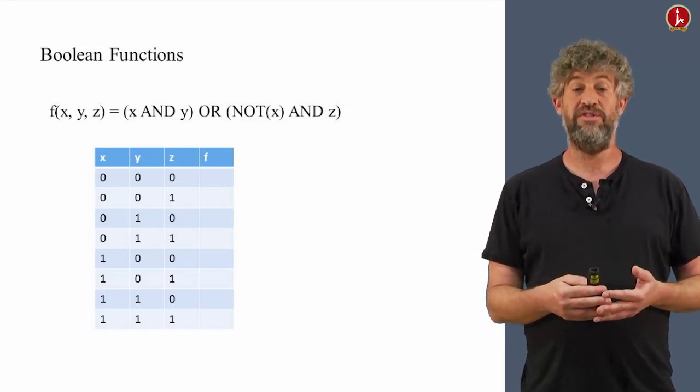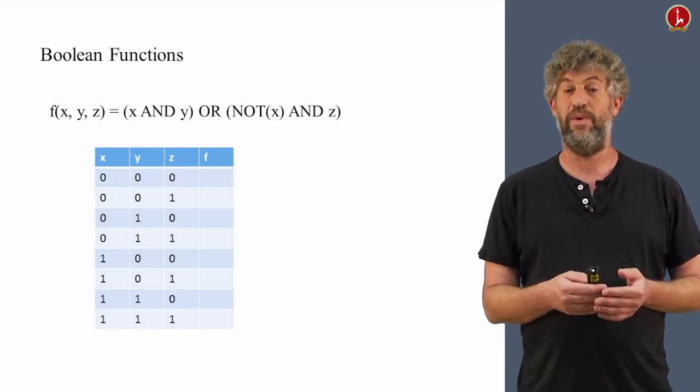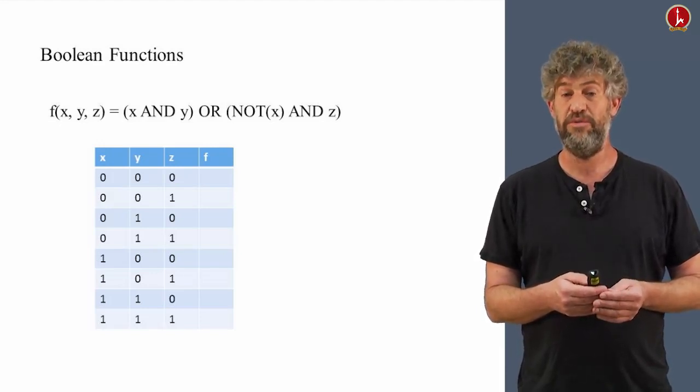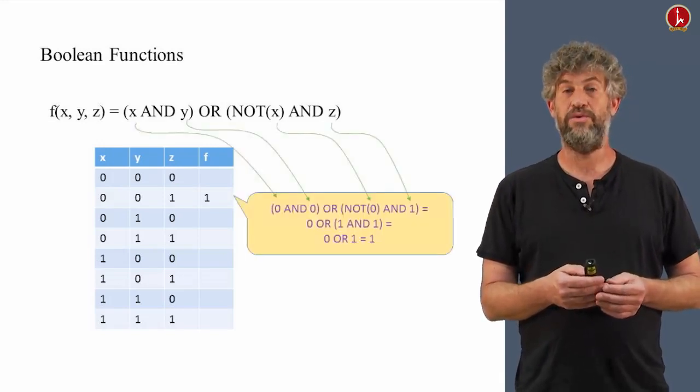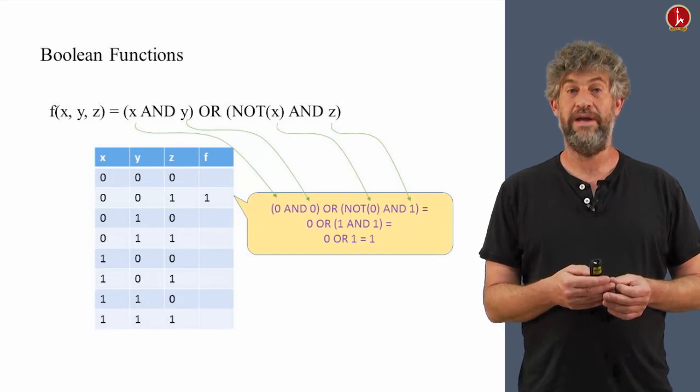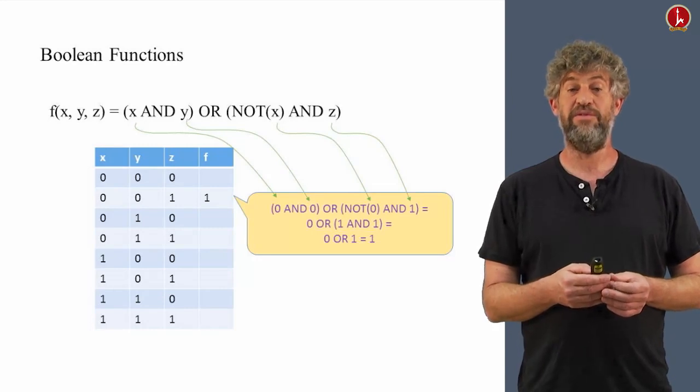Now, for each one of these rows, we can just evaluate the function, what is the function f(x, y, z) defined by the previous formula for these values. For example, let's look at the second row. In the second row, we have x equals 0, y equals 0, z equals 1. And we can just plug in the numbers 0, 0, 1 into the formula.